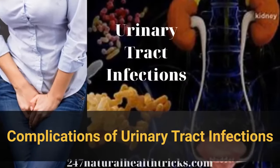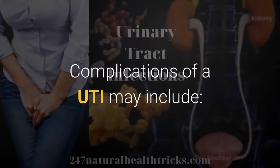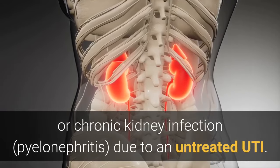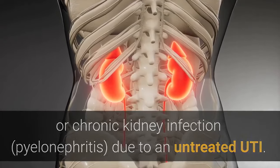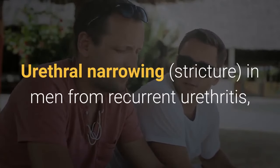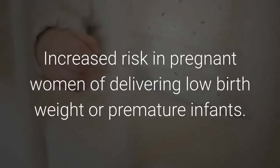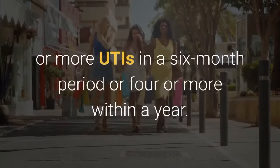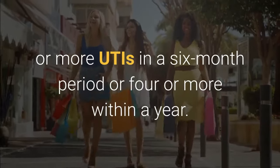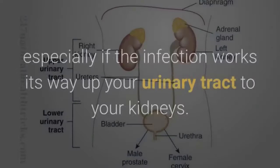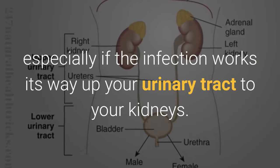Complications of urinary tract infections may include: permanent kidney damage from acute or chronic kidney infection due to an untreated UTI; urethral narrowing (stricture) in men from recurrent urethritis; increased risk in pregnant women of delivering low birth weight or premature infants; recurrent infections, especially in women who experience two or more UTIs in a six-month period or four or more within a year; and sepsis, a potentially life-threatening complication, especially if the infection works its way up the urinary tract to the kidneys.